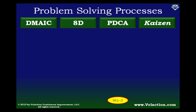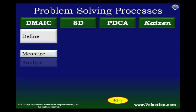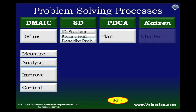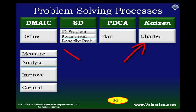Now let's take a look at the problem solving steps in more detail. DMAIC stands for Define, Measure, Analyze, Improve, Control. You'll notice that each of these methods has a great deal of overlap. The charting process of a Kaizen, for example, is similar to the Define step in DMAIC. While 8D breaks this step into a few smaller ones, combined they match up nicely to the Define step.